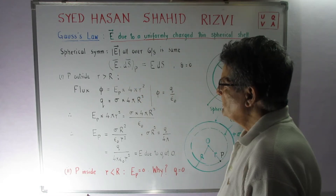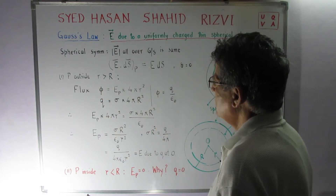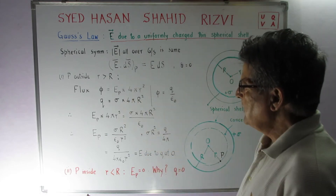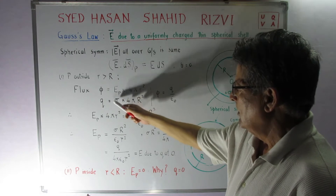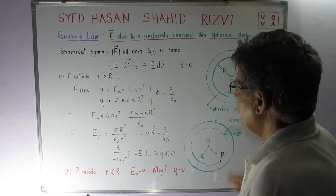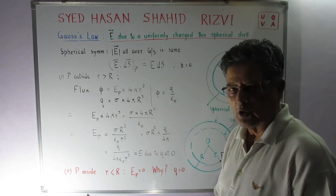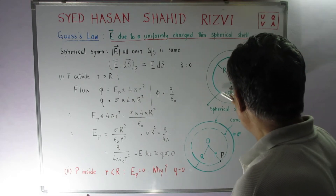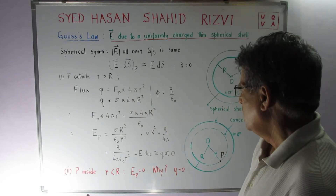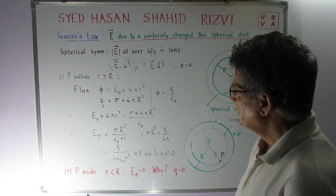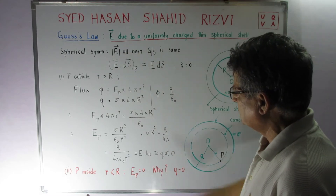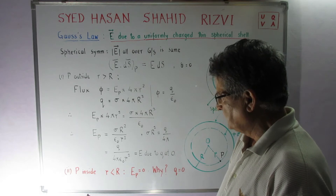The electric field is considered the same all over the Gaussian surface. Since the charge is positive, the field points outward so E and dS have the same direction; theta equals zero. For a point P outside where small r is greater than capital R, the flux phi equals E_P into 4 pi r squared. The charge enclosed by this surface is sigma times 4 pi capital R squared, since 4 pi R squared is the area of the spherical shell. Applying Gauss's law: flux equals charge enclosed divided by epsilon-naught.